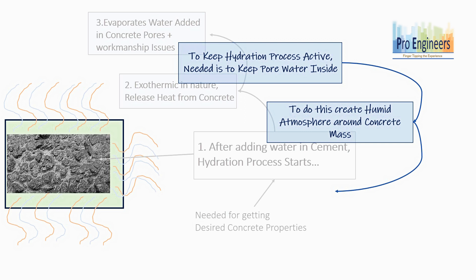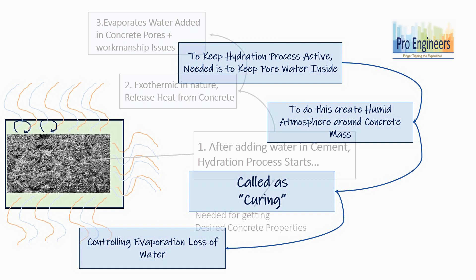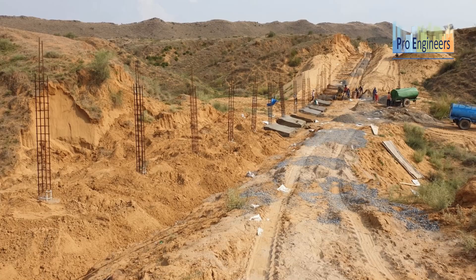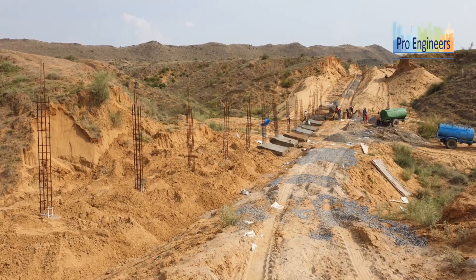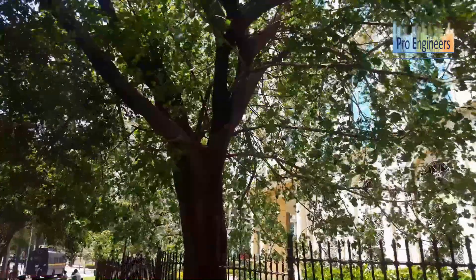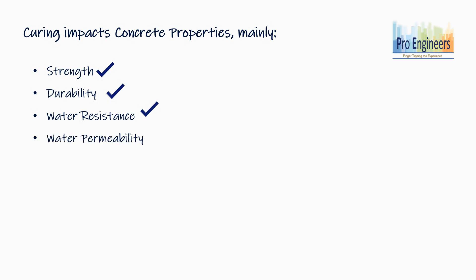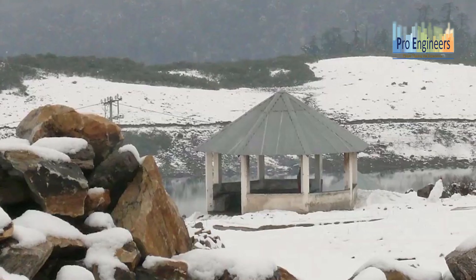In short, curing is nothing but prevention of evaporation loss of water from the concrete mass. This evaporation depends mainly on three factors: high ambient temperature, low humidity in atmosphere, and high wind velocity. Curing has a strong influence on various concrete properties such as strength, durability, water resistance, water permeability, volume stability, chemical attack resistance, and freeze-thaw reaction.